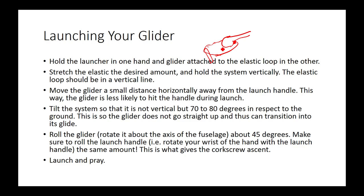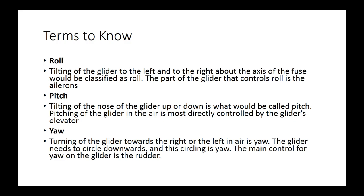Move the glider a small distance horizontally away from the launch handle so it doesn't hit it. Tilt the system so it's at 70 to 80 degrees with respect to the ground — kind of pointing upward at an angle. Then roll the glider about 45 degrees, tilting the wings at an angle, so it does a corkscrew ascent up. Then you just launch it.